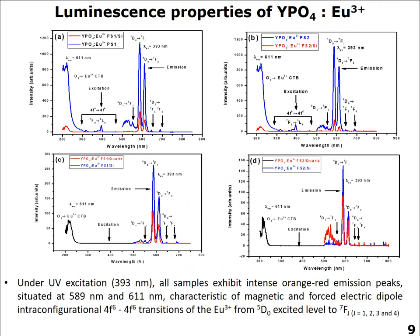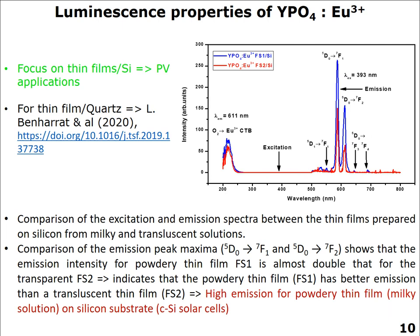For the luminescence properties, we found that for powders under UV excitation, the samples exhibit intense orange-red emission peaks characteristic of europium ions. We are going to focus only on films deposited on silicon because of their interesting application for photovoltaics. By comparison of two thin films deposited on silicon substrate — one from a milky solution and the other from a translucent solution — results showed that we can have higher emission for the powdery thin film on silicon compared to the transparent thin film.